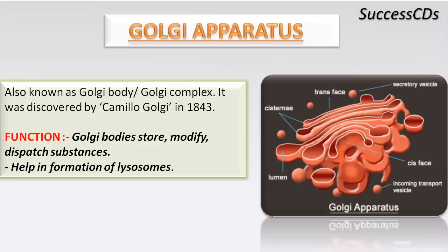The Golgi apparatus is named after scientist Camillo Golgi, who discovered it in 1843. It can also be called the Golgi body or Golgi complex. The basic function of the Golgi bodies is to store, modify, and dispatch substances from the endoplasmic reticulum to other parts of the cell. They also help in the formation of lysosomes.